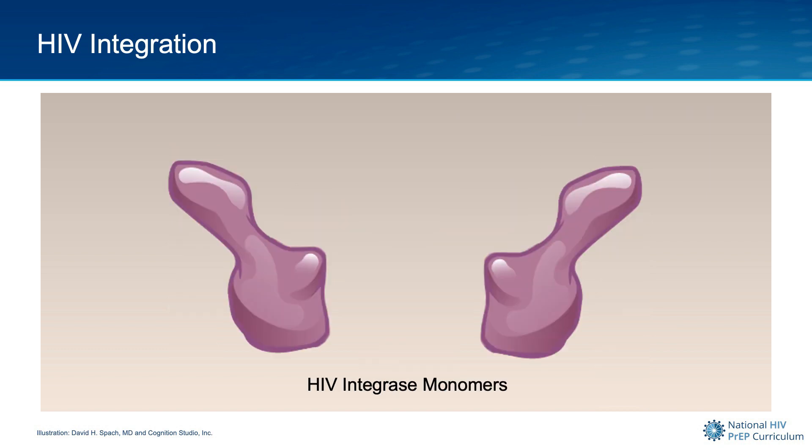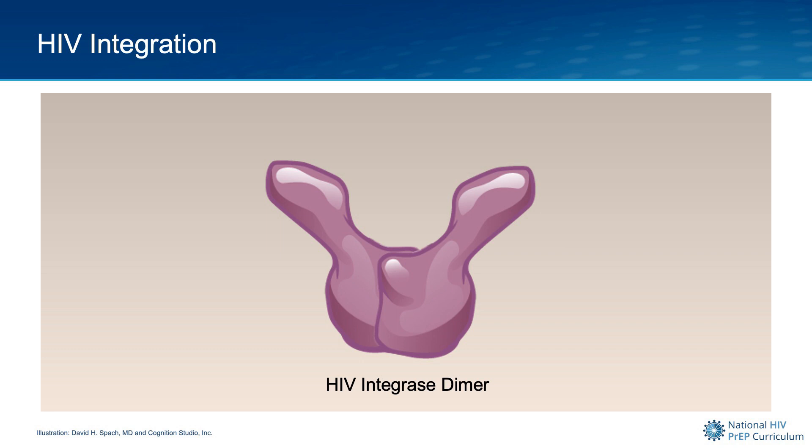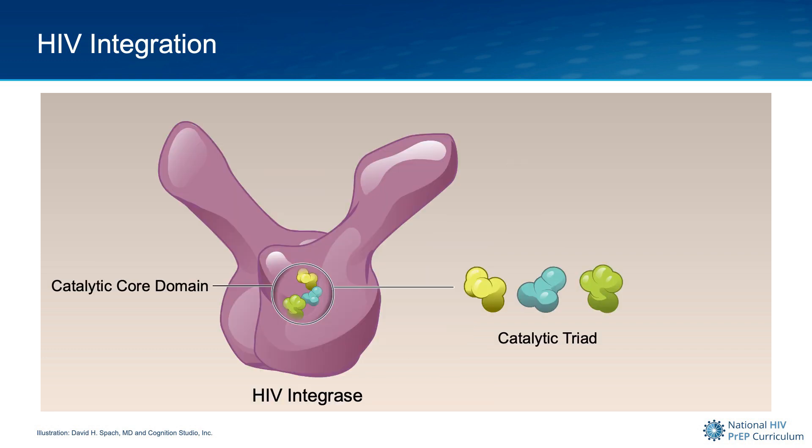The integrase monomer enzymes typically form as a pair or dimer. The active site for the integrase enzyme is referred to as the catalytic core domain, and this region contains a cluster of three amino acids that form the catalytic triad.